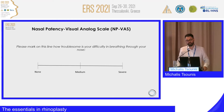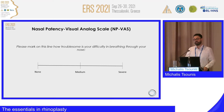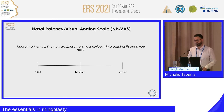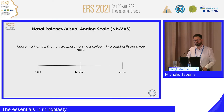An even simpler instrument is the nasal patency visual analog scale — a straight line without calibration. The left edge refers to absence of symptoms; the right edge refers to the most severe symptoms. The patient places a mark on the line and conclusions are drawn based on where the mark is placed.